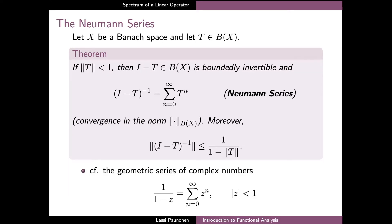In proving the previous results we can use the so-called Neumann series, which is presented on this slide. This result states that if the operator T has norm strictly less than 1, then the operator of the form I minus T has a bounded inverse, which is given by an infinite series of powers of the operator T. This infinite series is considered in the space of bounded linear operators on X and it converges with respect to the operator norm. In addition, this result also gives an upper bound for the norm of the inverse of I minus T in terms of the norm of T.